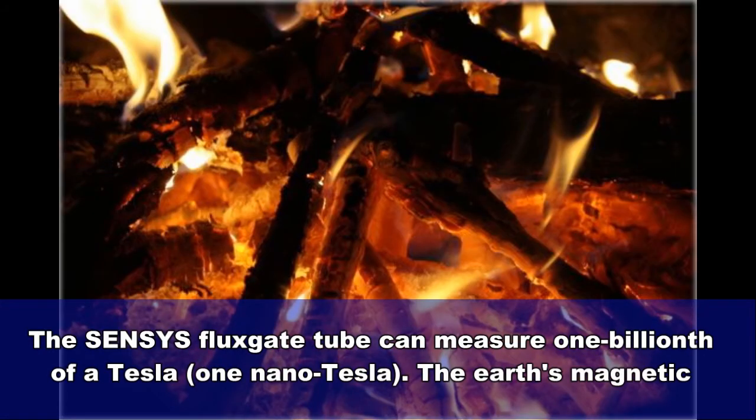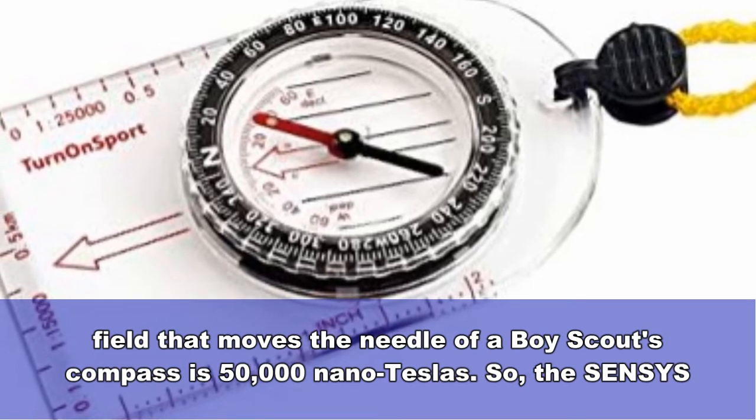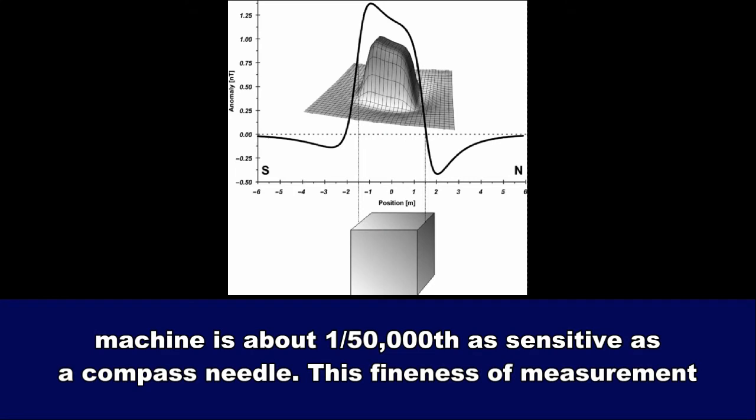The SENSI flux gate tube can measure one billionth of a Tesla, one nanotesla. The Earth's magnetic field that moves the needle of a Boy Scout's compass is 50,000 nanoteslas. So the SENSI machine is about one fifty thousandth as sensitive as a compass needle.